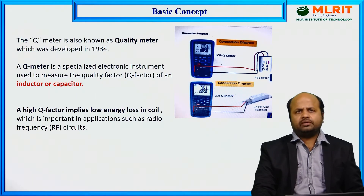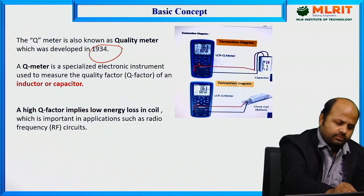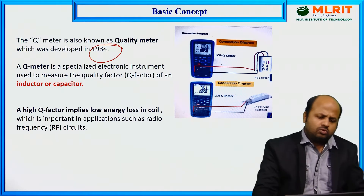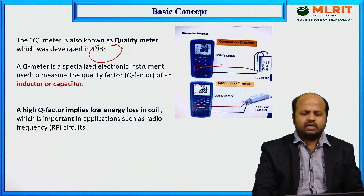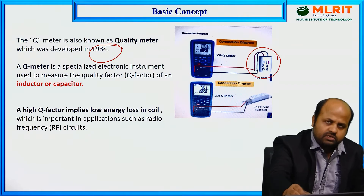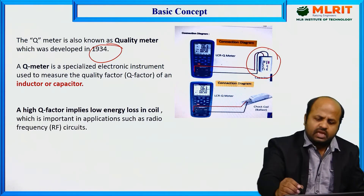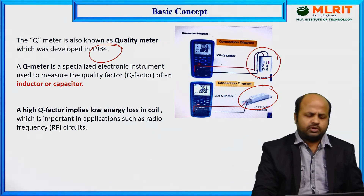Q stands for quality, so Q-meter is also known as quality meter, which was developed in 1934. Q-meter basically measures the quality of an inductor or capacitor. As we can see in the diagram, in order to measure the quality of a capacitor or inductor, we can use the Q-meter.